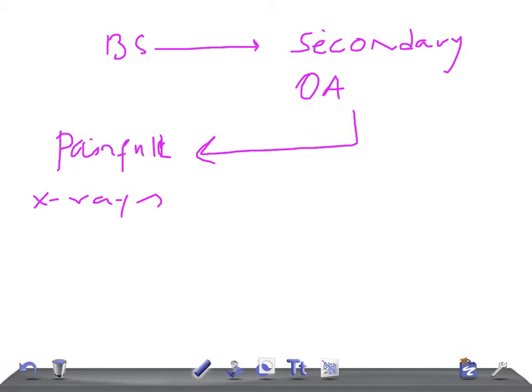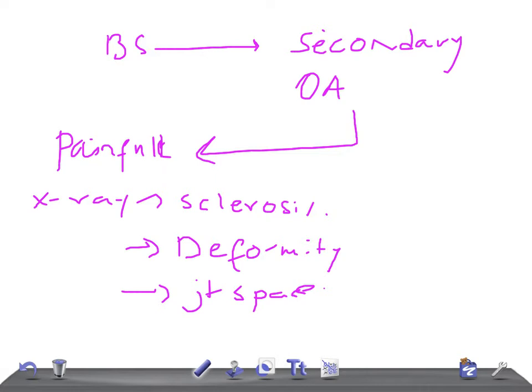There will be sclerosis of the necrotic area. Avascular bodies are unable to share osteoporosis as occurs in the surrounding normal bones because of disuse, hence it stands up densely on x-ray. The other thing you can see is deformity of the bone because of the collapse of the necrotic bone. There can be osteoarthritis - joint space will be narrowed, and osteophytes can be seen. It's possible to diagnose avascular necrosis on bone scan before changes appear on plain x-ray.